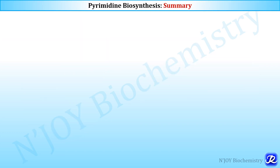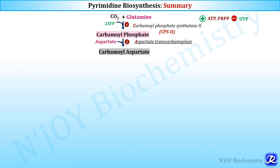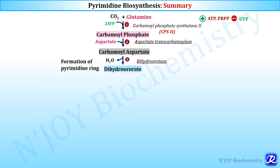Summary: Step 1 — CPS2 transfers the amido group from glutamine to CO2 to form carbamoyl phosphate; activated by ATP and PRPP, inhibited by UTP. Step 2 — aspartate transcarbamylase forms carbamoyl aspartate. Step 3 — dihydroorotase forms dihydroorotate via ring closure. These three enzymes form the multifunctional CAD complex (C = carbamoyl phosphate synthase 2, A = aspartate transcarbamylase, D = dihydroorotase).